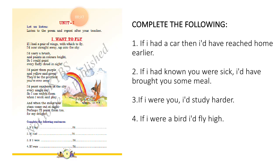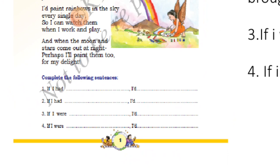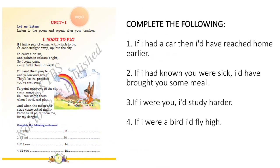Take page number one. The first point is 'I Want to Fly.' Below this, they have given four fill-ups. Complete the following sentences. They have given the pattern: 'If I had dash, I'd dash.' The poet is telling that if I had a pair of wings, I'd fly high. We have to complete the following in the same way.